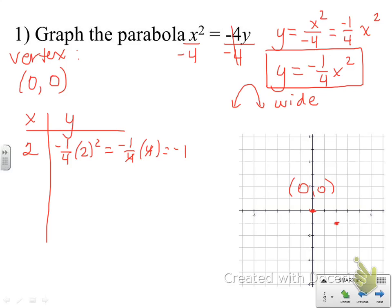Another smart value: instead of picking three, which when squared isn't divisible by four, I'll pick x equals four. Four squared is sixteen, which is easily divisible by four. Negative one-fourth times sixteen gives me a y value of negative four. So I also have another point on my parabola at (4, -4).